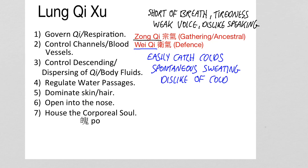The Wei qi flows at the surface, protects us, controls our sweating, and regulates our temperature. So if it's weak, we can easily catch colds, get spontaneous daytime sweating, and a dislike of cold.